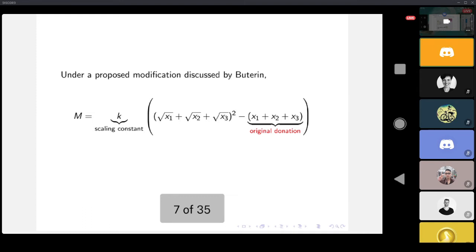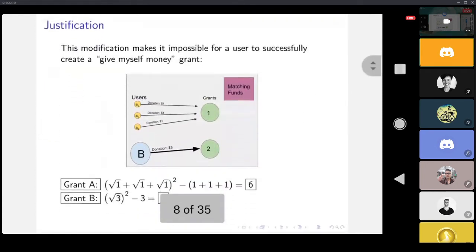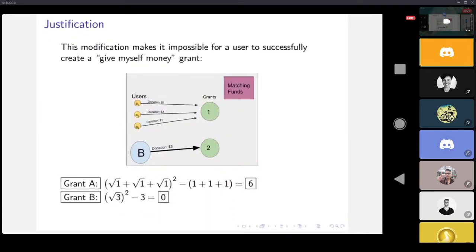Buterin, in his blog post that is linked in a recent forum discussion with Danilo, says you should subtract off the original donation. So instead of applying the original formula as it is, you subtract off the actual x_i squared terms. This does two things: first, it makes it impossible to create a 'give myself money' grant, because by subtracting off the original amount, now B doesn't get any funds - B loses three dollars to the pool.